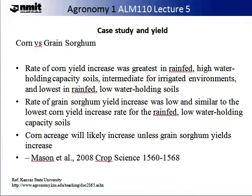Now we are going to look at a case study on yield put together by Kansas State University: corn versus grain sorghum. The rate of corn yield increase was greatest in rain-fed, high-water-holding capacity soils, intermediate for irrigation environments, and lowest in rain-fed, low-water-holding soils. The rate of grain sorghum yield increase was low and similar to the lowest corn yield increase rate for rain-fed, low-water-holding capacity soils. This shows us that climate and soils interacting together result in different rates of yield production for different species.